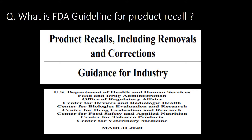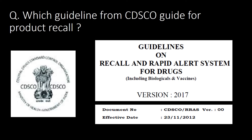What is the FDA guideline for product recall? The title is 'Product Recalls Including Removals and Corrections,' edition March 2020. Which guideline from CDSCO covers product recall? It is 'Guidelines on Recall and Rapid Alert Systems for Drugs Including Biologicals and Vaccines,' version 2017, document number CDSCO/RRAS version 00.